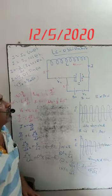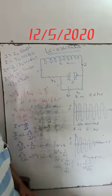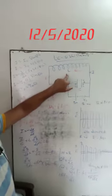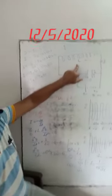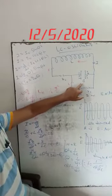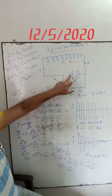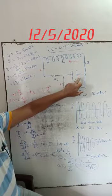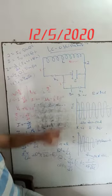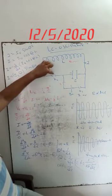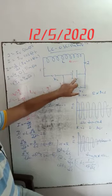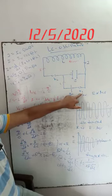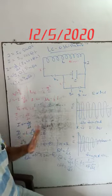LC oscillator. L is the self-inductance of the coil, C is the capacitance of the capacitor. The inductance of the coil is connected in series with the key K2 and also the capacitor C. Across this capacitor, a battery and another key K1 are connected in series.